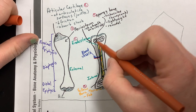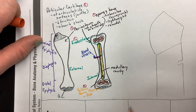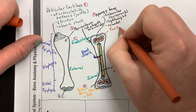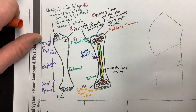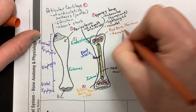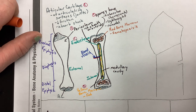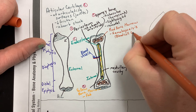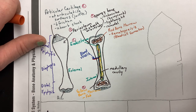Spongy bone also acts as a site to store red bone marrow. Unlike yellow bone marrow, which stores fat, red bone marrow has a different job called hematopoiesis — a fancy word for blood cell formation. So in red bone marrow, a lot of your blood cells are born.